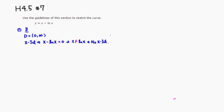We can find asymptotes. For the vertical asymptote, we take the limit of x minus natural log of x as x approaches 0 from the positive side. x is going to 0, but natural log of x approaches negative infinity. With the negative sign in front, this approaches positive infinity. So we have a vertical asymptote at x equals 0.